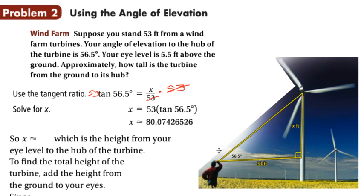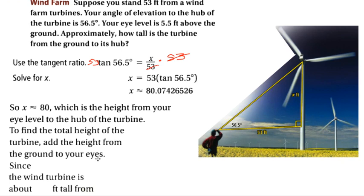We did not add that 5.5 feet back in yet. Remember, the person's eye level is 5.5 feet above the ground, so we need to add that back in. If x is approximately 80.1, then adding 5.5 feet gives us 85.5 feet tall for the wind turbine.